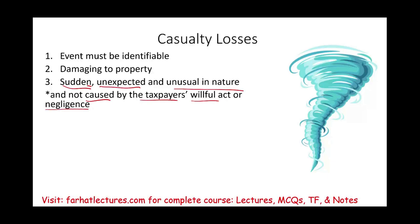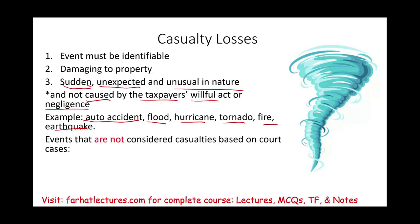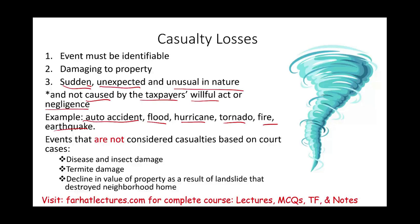Events that are not considered casualty losses based on court cases include diseases and insect damage, because those happen over time. Termite damage happens over time. Decline in property value as a result of a landslide that destroyed a neighboring home also happens over time — those are not sudden. Generally speaking, acts of nature are casualty losses.